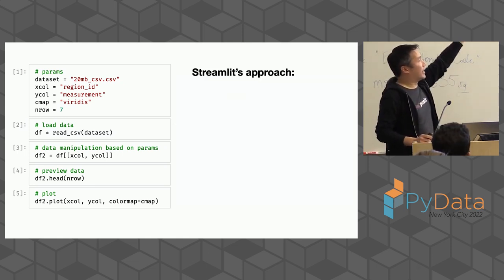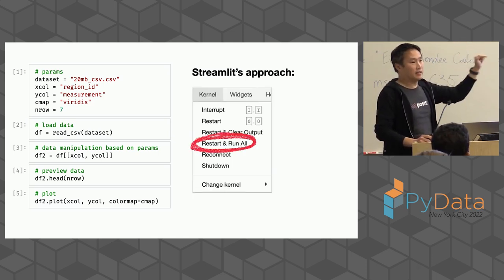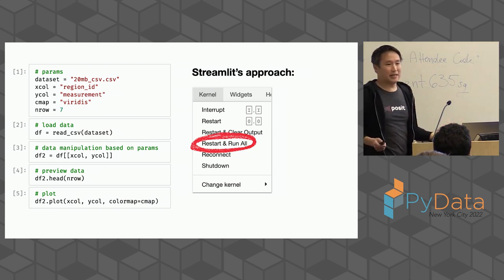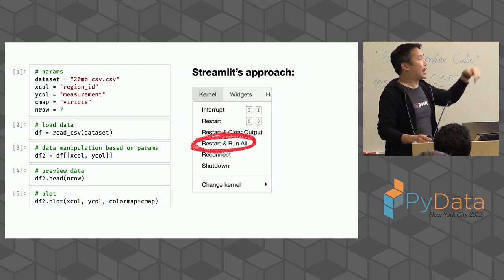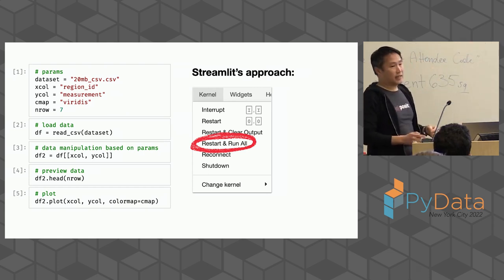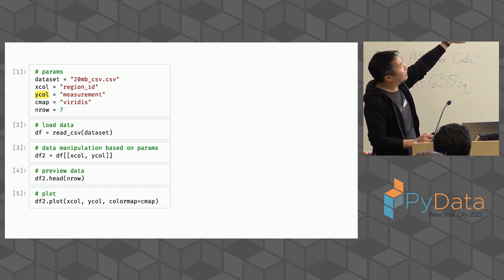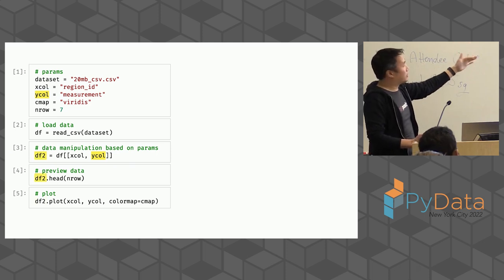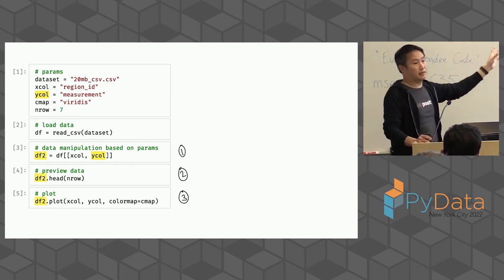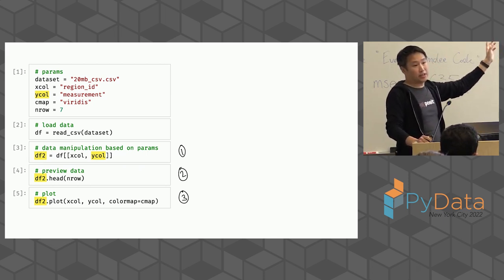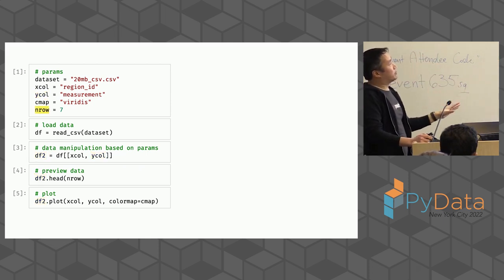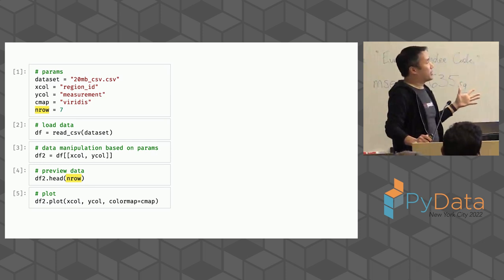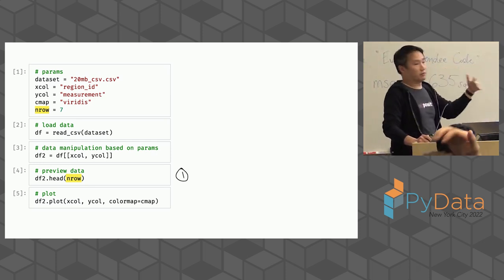How does Streamlit deal with this? As inputs change — restart and run all. That is the only model it supports; it just constantly reruns the whole thing. That's fine for a lot of apps if your data is small and everything happens quickly. But if that data is a 20-minute CSV, it's leaving performance on the table. If the Y column changes, cell three uses Y column, so that affects df2, and df2 is used in two places — so we have to re-execute those three cells. But we don't have to execute the read CSV. And yet Streamlit is going to do that anyway.